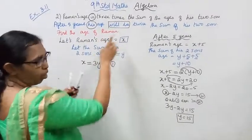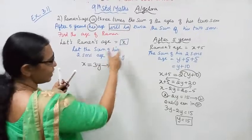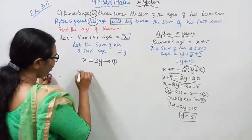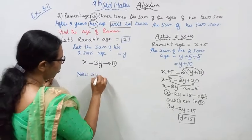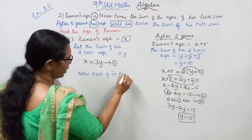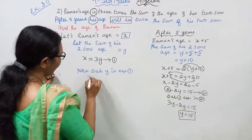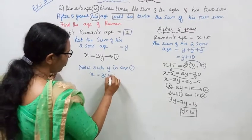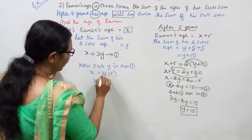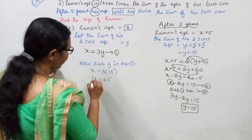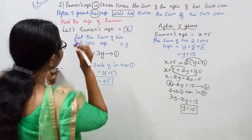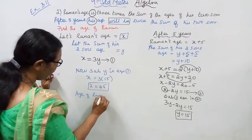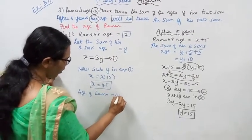Age of Raman: x equal to 3y. Now substitute y equal to 15 into equation 1. x equal to 3 into 15. x equal to 45. Answer: Age of Raman equal to 45.